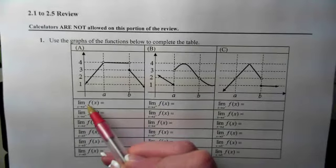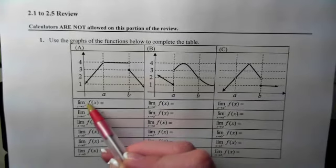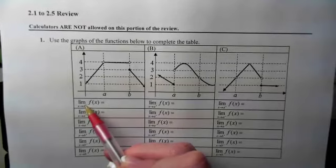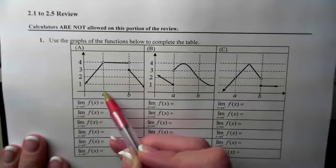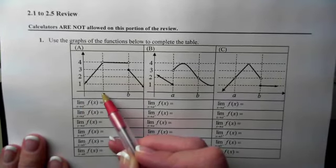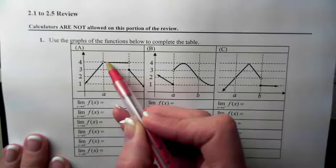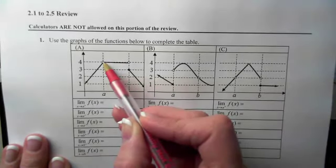if we look at this one, this says, what are the Y coordinates getting close to as X approaches A from the right-hand side? To answer this, we will locate A on the X-axis, move a little bit to the right, hop up on the curve, and then move along the curve until we're directly over A.